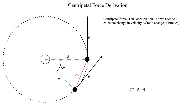Now we'll get into how to quantify these forces. I want to walk through a derivation to show where the equation for centripetal acceleration comes from. Centripetal and centrifugal force are equal in magnitude — one just has the opposite sign. You may recall from physics that centripetal force equals mass times v² over r, so centripetal acceleration is simply v² over r. Let me show you where that comes from using a bit of geometry.